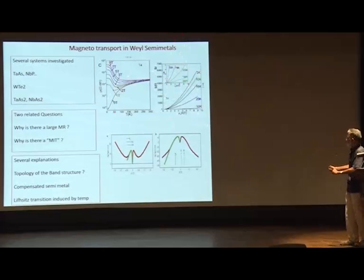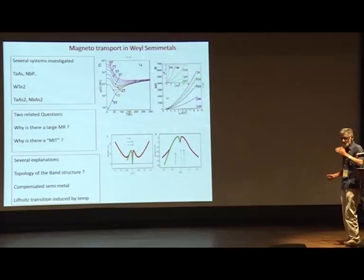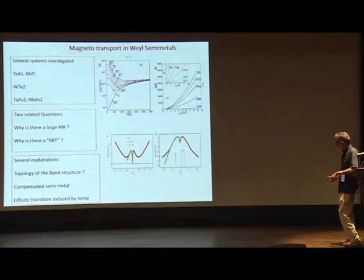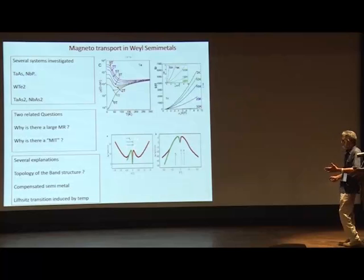There are also experiments — for example in tantalum phosphide — where magneto resistance is measured with E parallel to B, the longitudinal configuration. A cusp behavior is observed and negative magneto resistance is seen in this region.